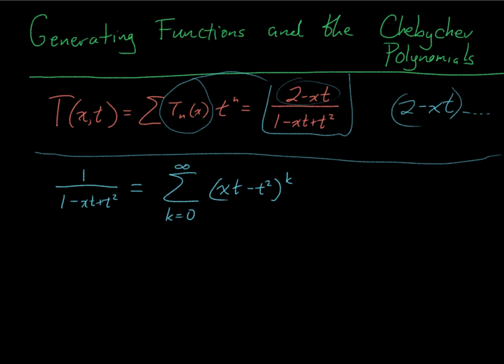And if you've taken analysis before, you're probably wondering, well, what about convergence and all that stuff. The thing about these generating functions, well, let's just take this one. If I pick a specific value for x, then this thing has some non-zero radius of convergence in t. On that open set, you've got absolute uniform convergence.